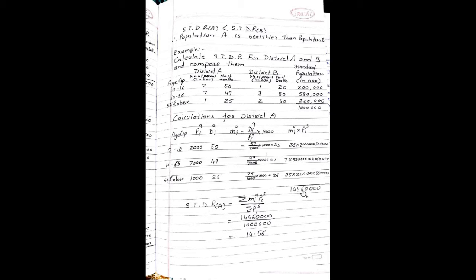The total of MIA into PIS is 1,45,60,000. STDR for District A is equal to summation of MIA into PIS upon summation PIS, which is equal to 1,45,60,000 divided by 1,00,00,000. So the answer is 14.56.